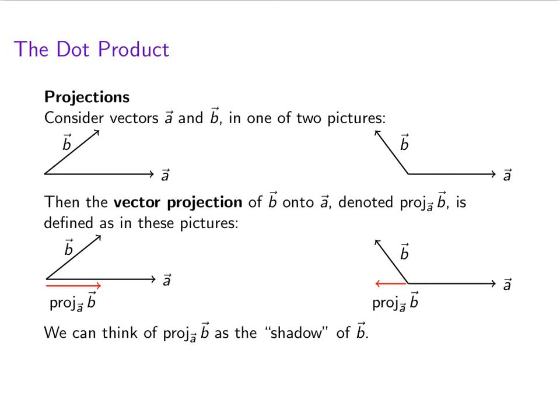Think of the projection of B onto A as the shadow of B, as a light source is shining down upon A.